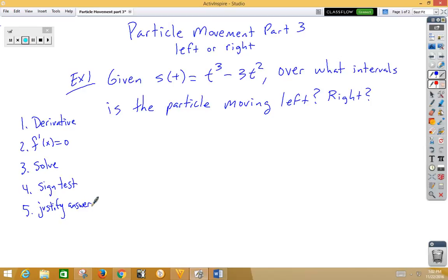First step is to do the derivative. So let's do s prime of t, which is the same as the velocity function, which is 3t squared minus 6t.